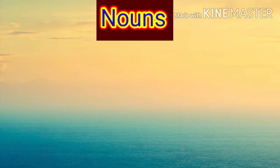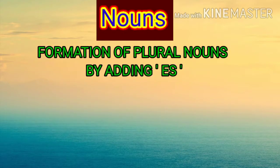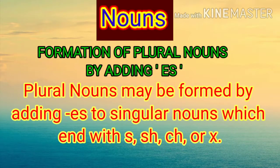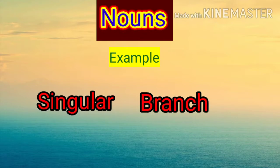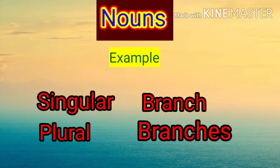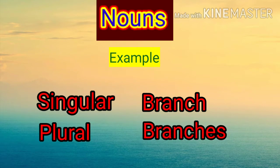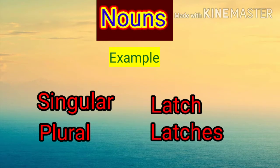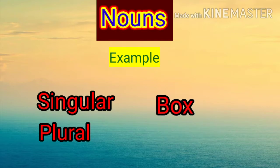Next heading: formation of plural nouns by adding -es. Plural nouns may be formed by adding -es to singular nouns which end with s, sh, ch, or x. For example: branch — plural form will be branches; we are adding -es at the end. Latch — latches; box — boxes.